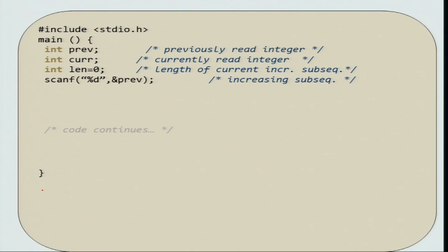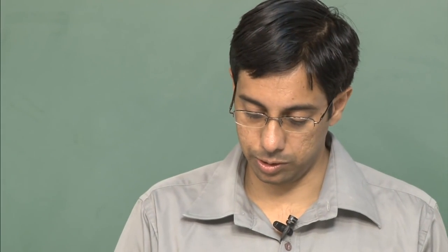Here is a new construct that we are seeing for the first time: when you declare a variable, you can also initialize it immediately by saying len equal to 0. This is a very intuitive notation — it will declare a variable and immediately initialize it to 0.